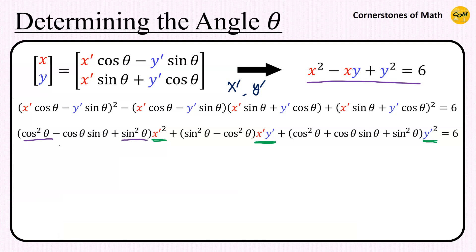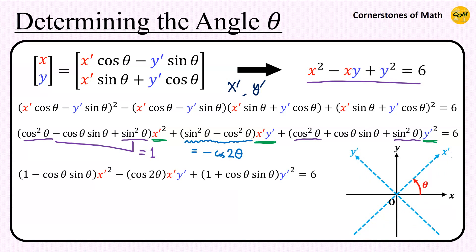Here, we can use cosine square theta plus sine square theta equals 1. And sine square theta minus cosine square theta equals minus cosine 2 theta, which gives 1 minus cosine theta sine theta x prime squared minus cosine 2 theta x prime y prime, plus 1 plus cosine theta sine theta y prime squared equals 6. This is the equation of the curve under x prime and y prime axis rotated by an arbitrary angle theta.